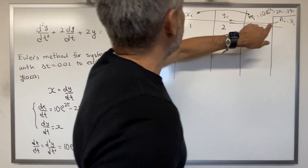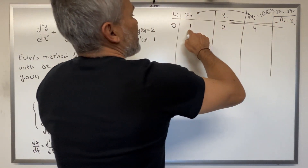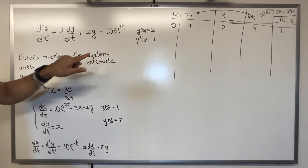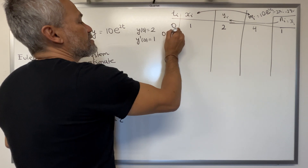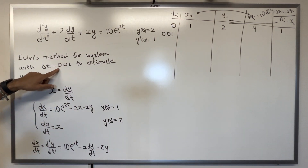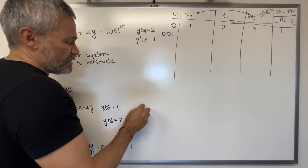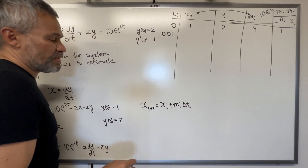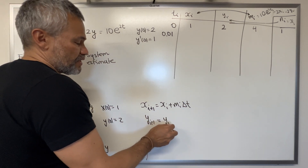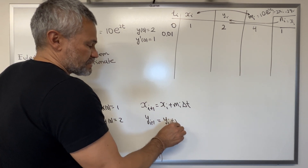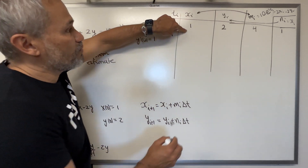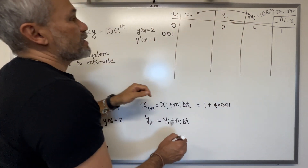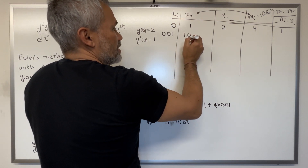The next t is the previous one increased by Δt, so t₁ = 0.01. The update formula for x is: xᵢ₊₁ = xᵢ + mᵢ · Δt. So x₁ = 1 + 4(0.01) = 1.04. Similarly, y₁ = y₀ + n₀ · Δt.